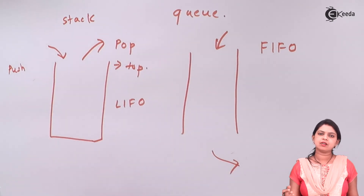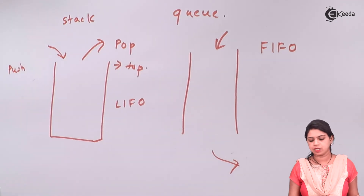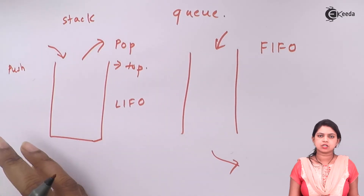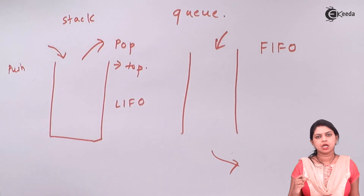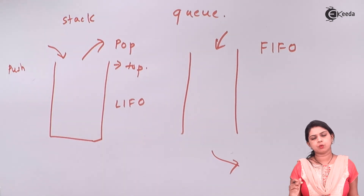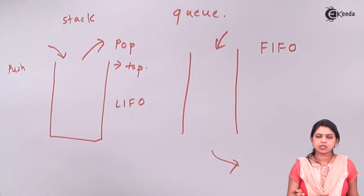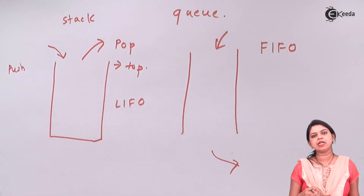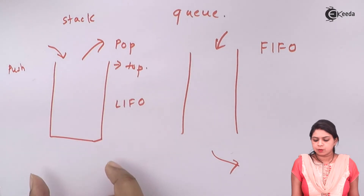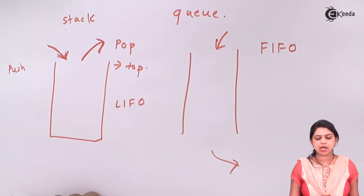Next we move to stack and queue, which are also data structures where data is stored in a different way. The stack data structure is always closed at one end and open only at the top. Insertion and deletion of elements in a stack take place only at one end called the top of the stack. Push is the term used to insert an element, and pop is the term used to delete an element.